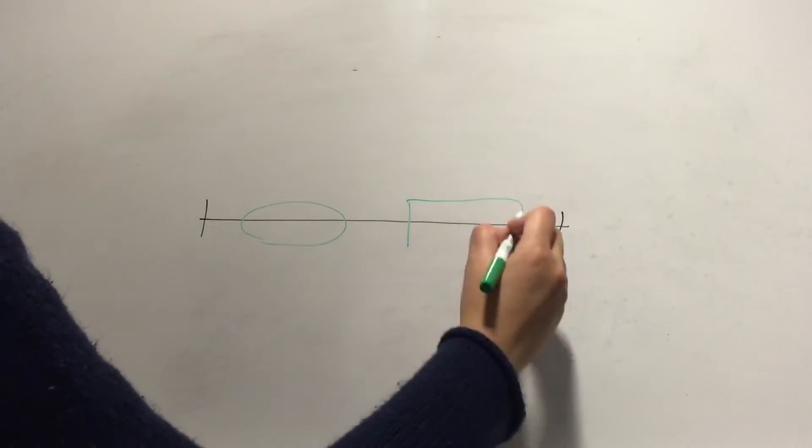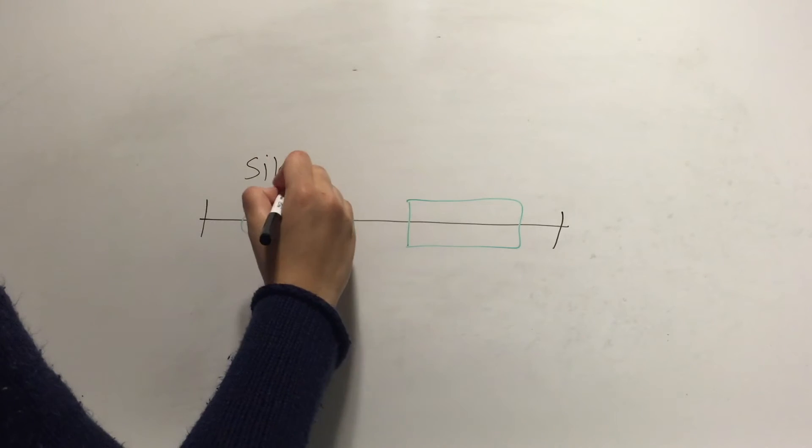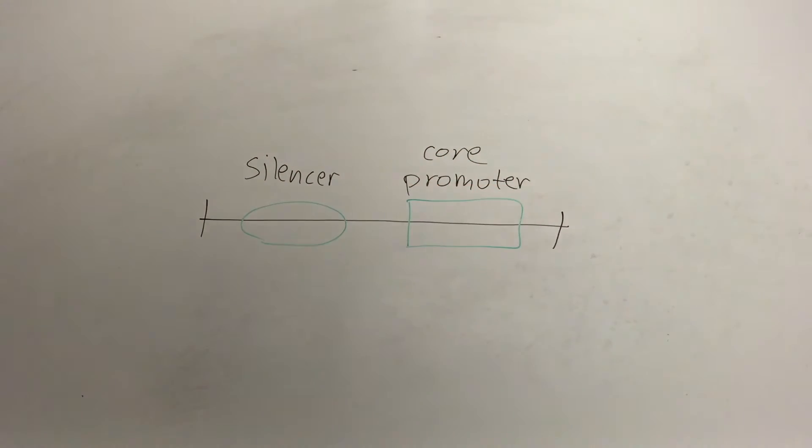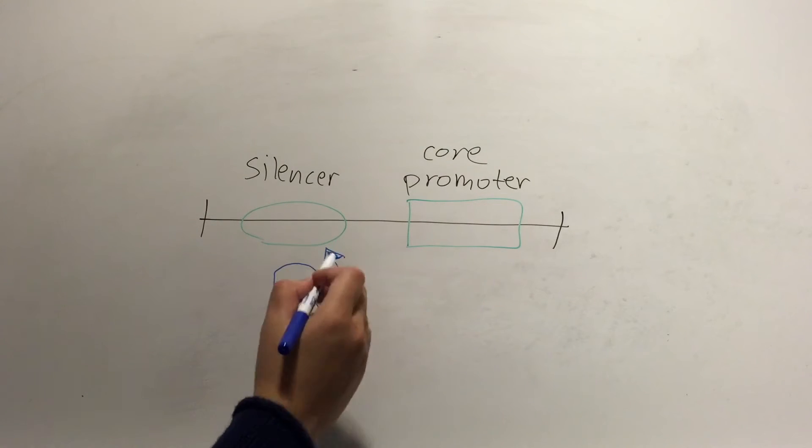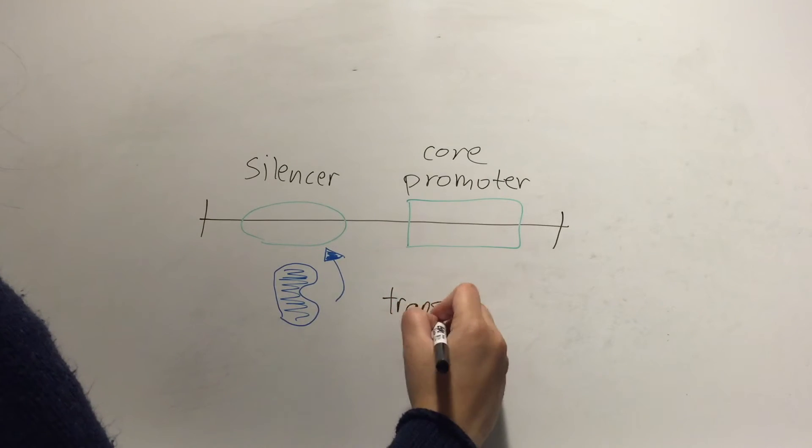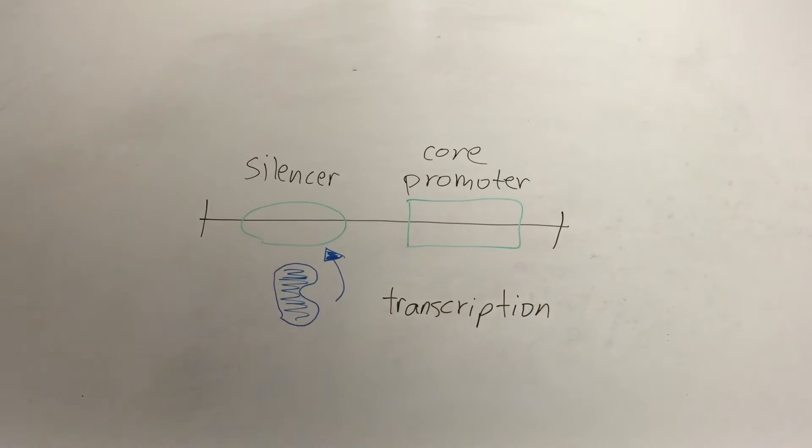A silencer is a sequence on the DNA usually located upstream of the promoter. It allows the repressor to bind to the DNA strand. This represses promoter activity and in turn transcription factors are unable to produce gene expression downstream.